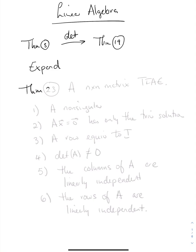Theorem 23. If A is an n by n matrix, the following are equivalent: 1. A is non-singular, as in A inverse exists. 2. Ax is equal to the zero vector has only the trivial solution. 3. A is row equivalent to I.